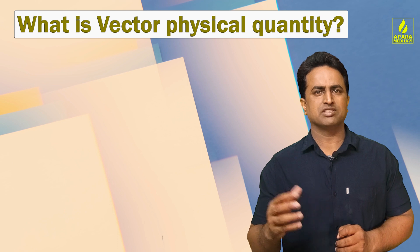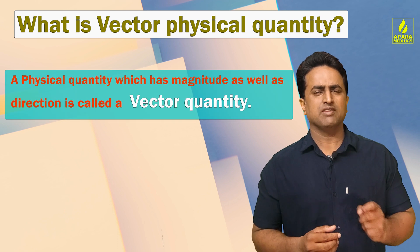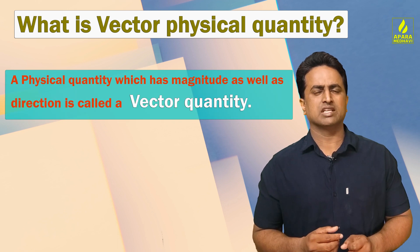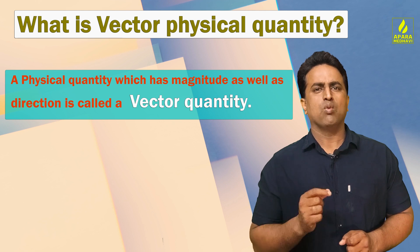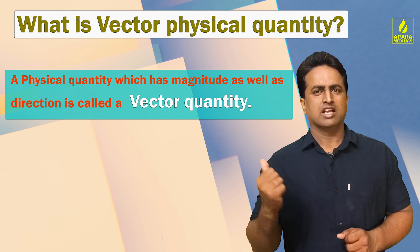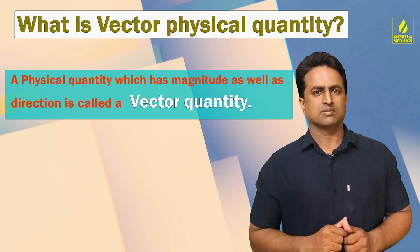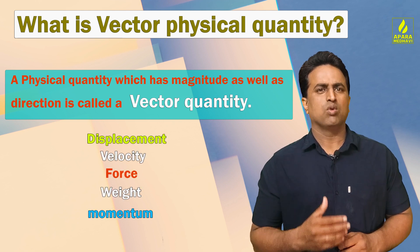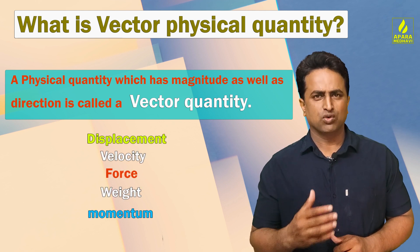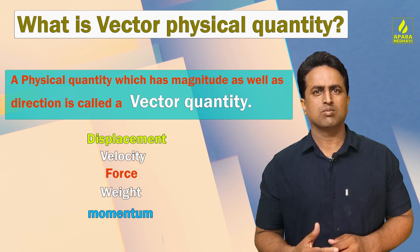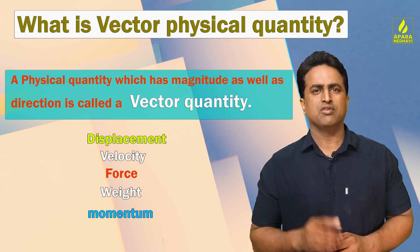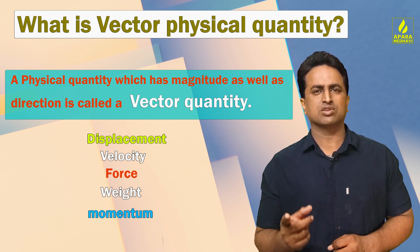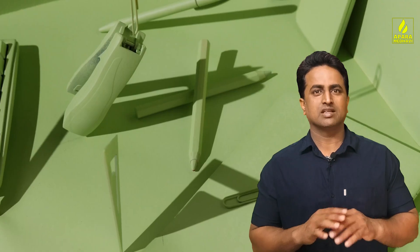What is a vector physical quantity? A physical quantity which has both magnitude and direction is called a vector quantity. Examples: displacement, velocity, force, weight, momentum, etc. Vector quantities have both magnitude and direction.